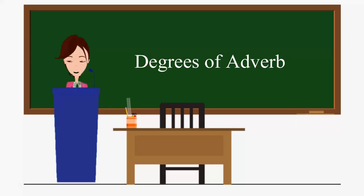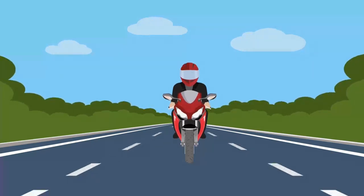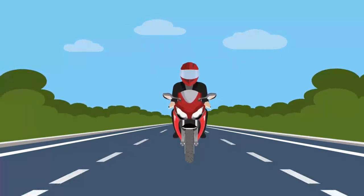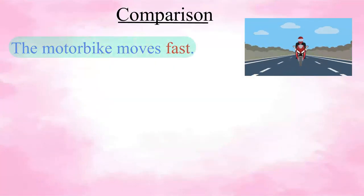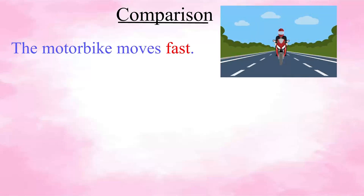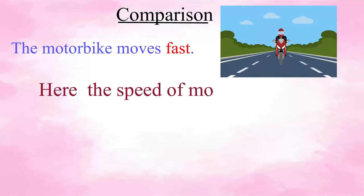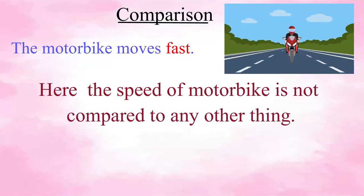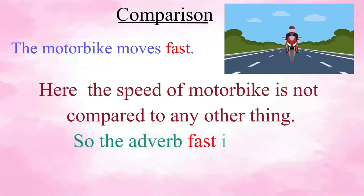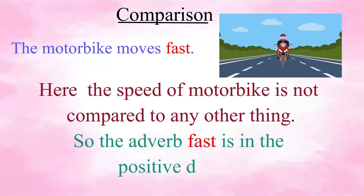One of the jobs of an adverb is to modify verb action. In this picture, we can see a motorbike is moving. The motorbike moves fast. This sentence simply describes how the bike is moving. Here, the speed of the motorbike is not compared to any other object. So the adverb 'fast' is said to be in the positive degree.